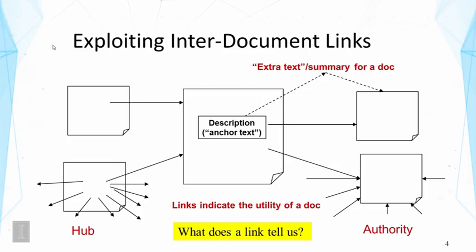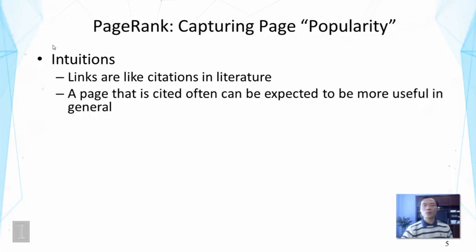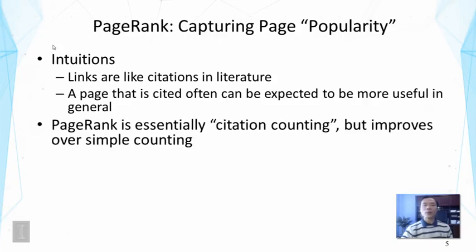People have proposed ideas to leverage this link information. Google's PageRank, the main technique used in their early days, is a good example — it is an algorithm to capture page popularity, essentially scoring authority. The intuition is that links are like citations in the literature: one page pointing to another is similar to one paper citing another. If a page is cited often, we can assume it to be more useful in general. PageRank takes advantage of this intuition and implements it with a principled approach.